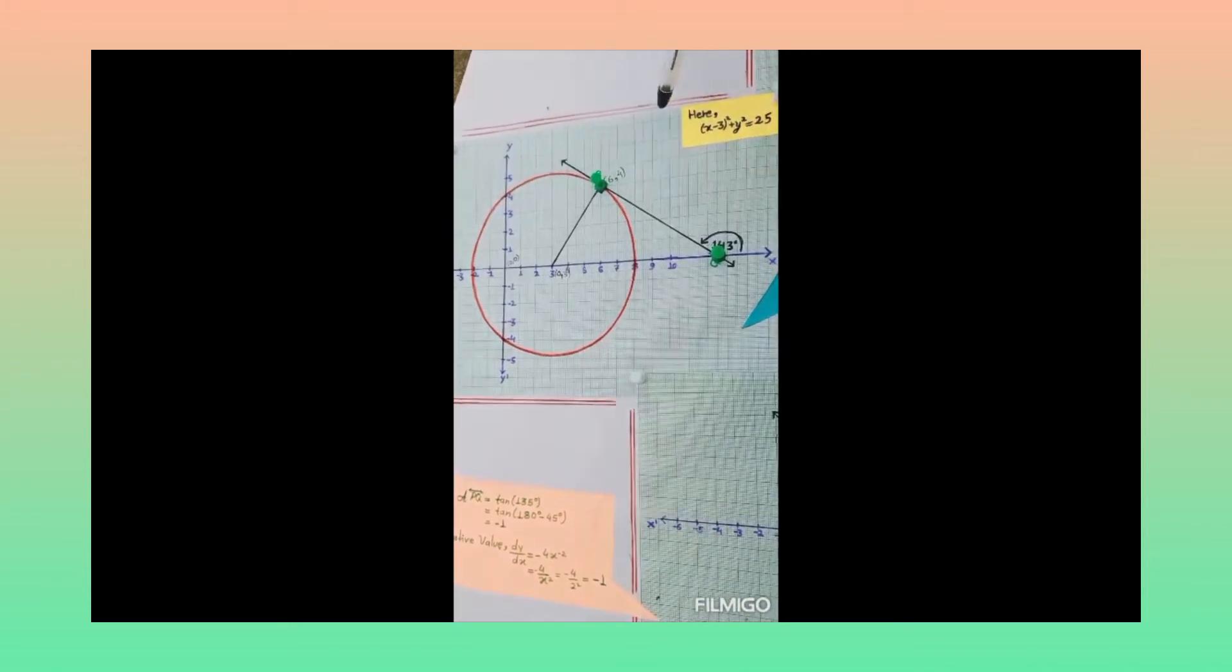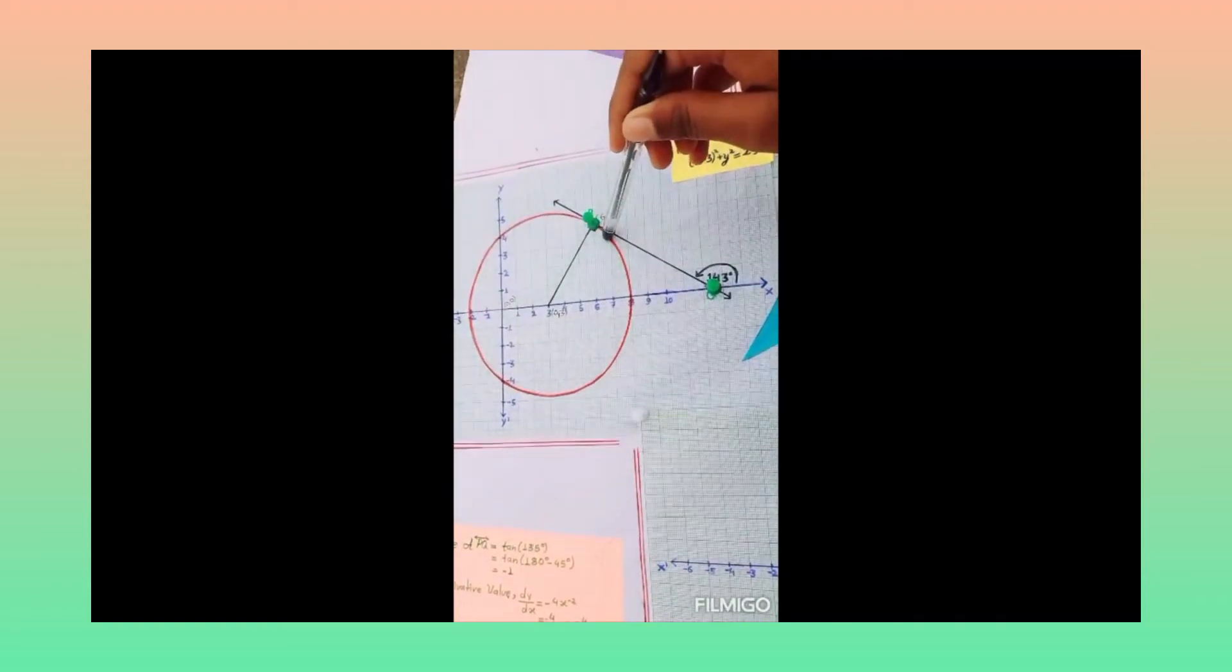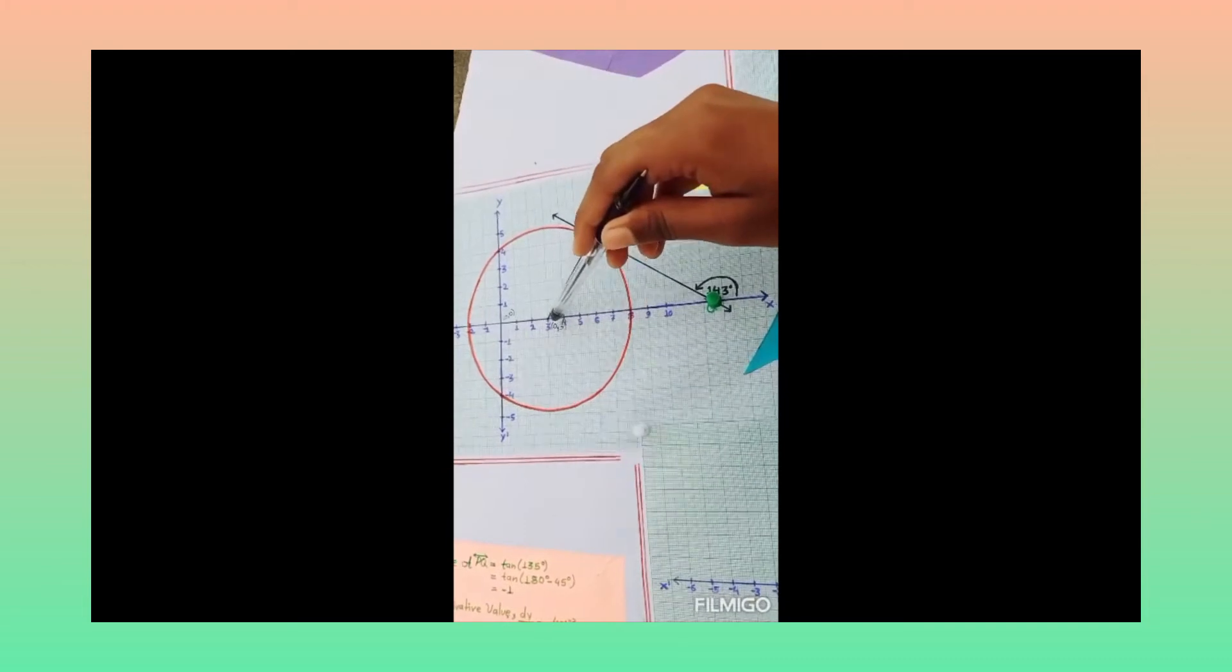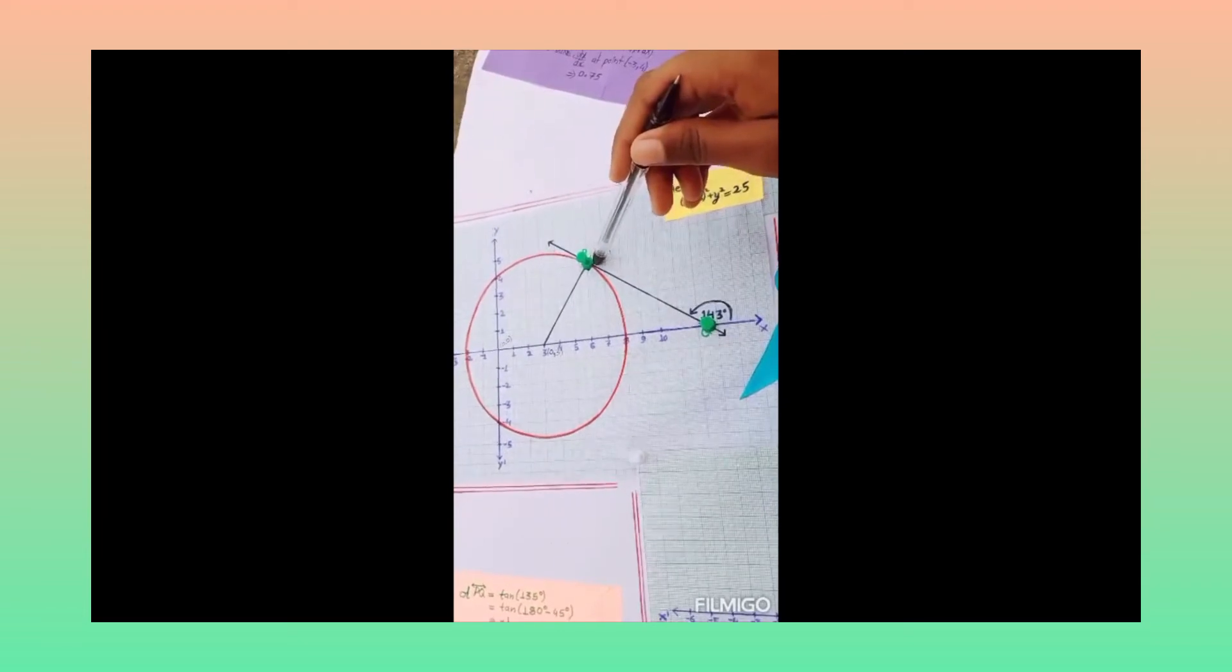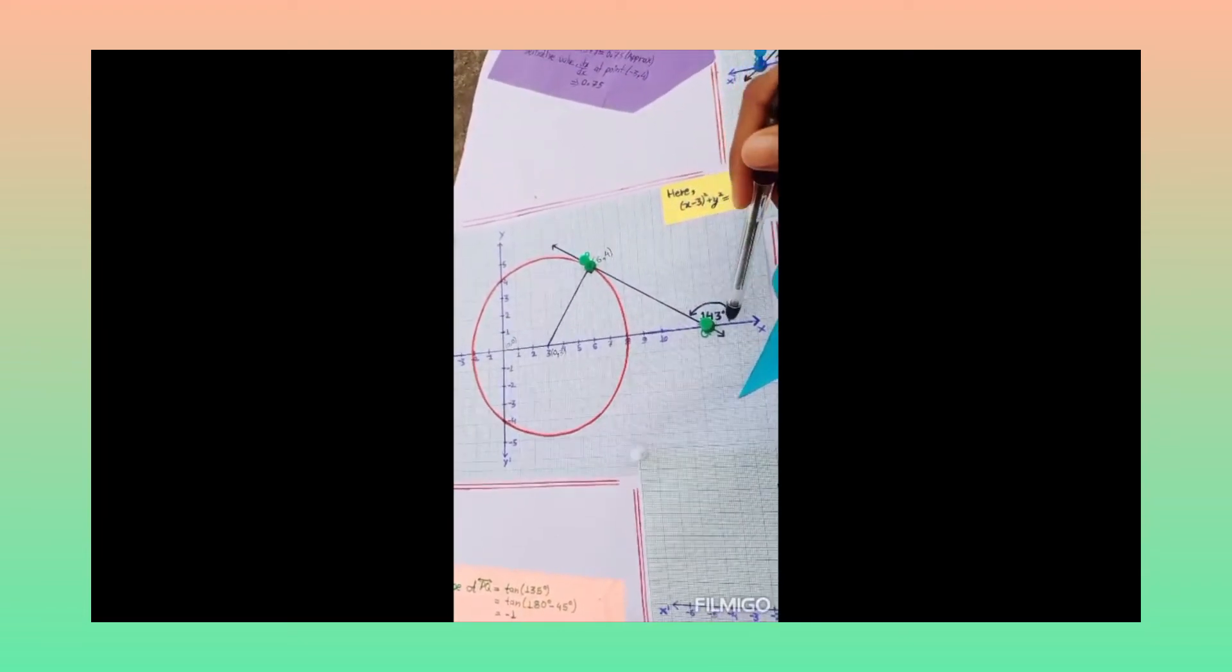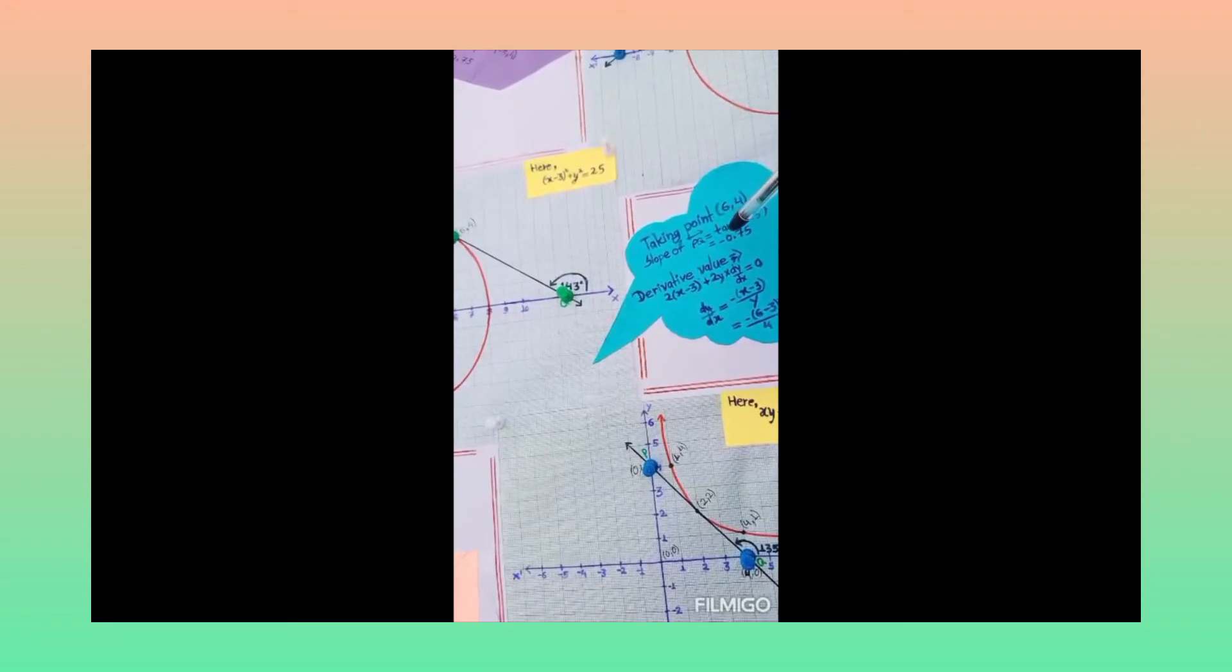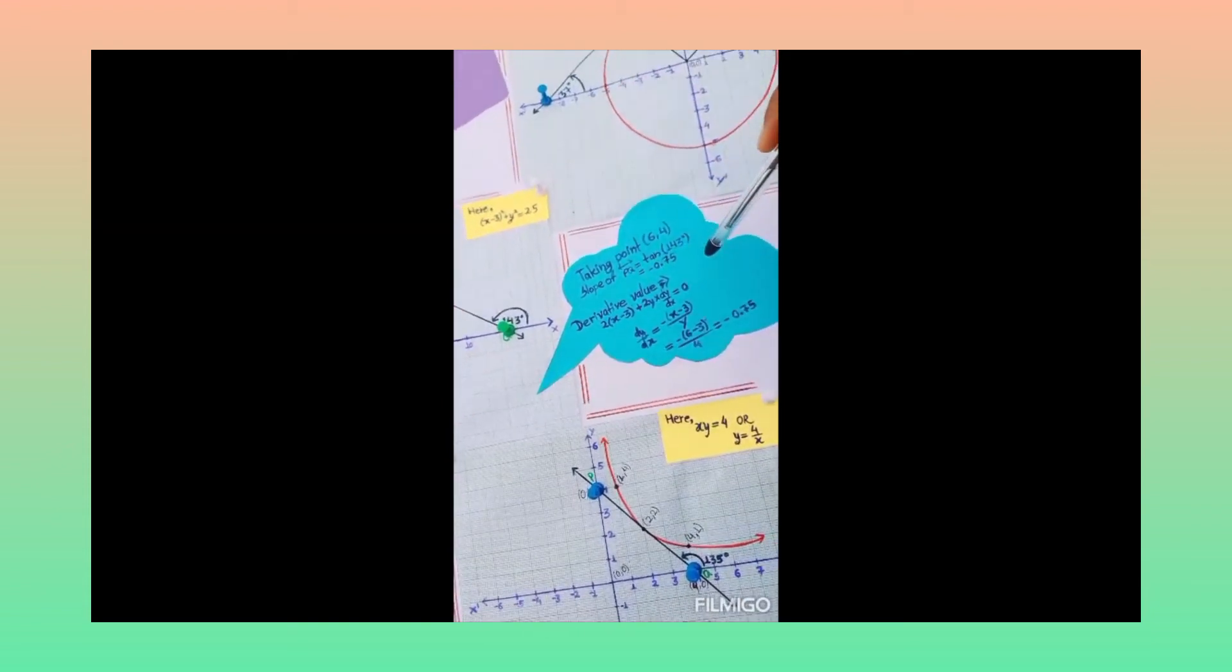Similarly for second graph, the equation is bracket x minus 3 whole square plus y square is equal to 25. In this circle any point satisfies this equation. For this circle, 0,3 is center. So we join center to the point P at 6,4. Now we make tangent from this point towards x axis. The angle of inclination is 143 degrees. So by taking point 6,4, slope of PQ is minus 0.75 and derivative value is also minus 0.75.